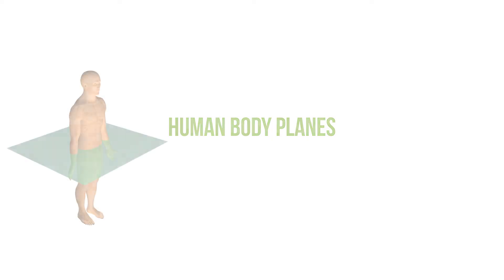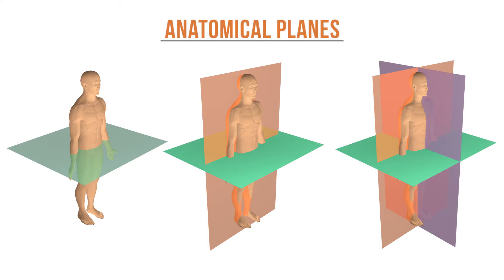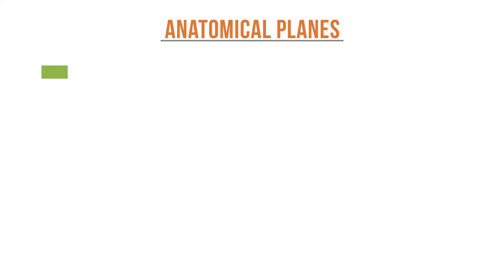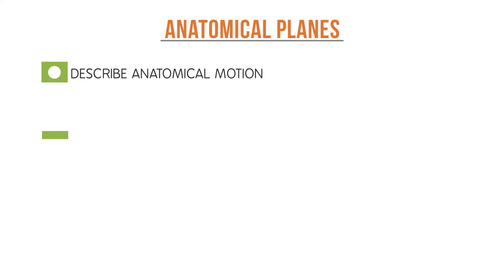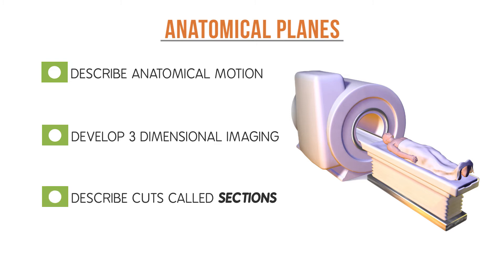When you need to explain the location of structures within the body, it is helpful to establish different points of view and get a three-dimensional or spatial sense of that structure. Unlike anatomical directional terms, anatomical planes allow us to do just that. In medicine, these planes have many uses. They are used to describe anatomical motion, to develop three-dimensional imaging of specific internal structures, and to describe cuts called sections which are made during medical examination of organs.